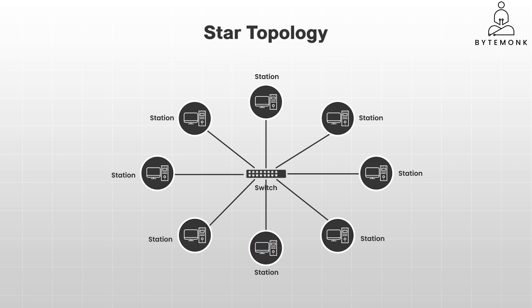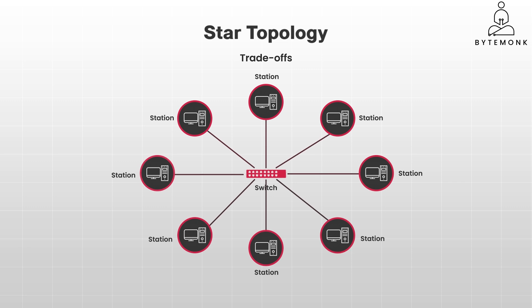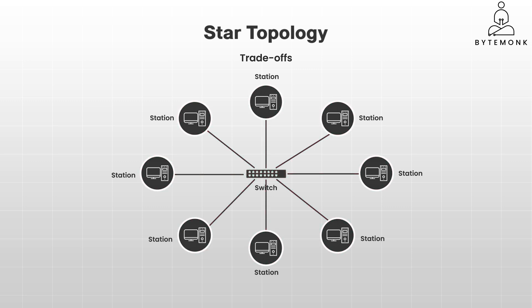No network topology is perfect, and star topology has its own trade-offs. The most notable is its dependence on the central hub — if the hub fails, the entire network goes down. It's a single point of failure. Additionally, the hub's capabilities can become a bottleneck, limiting the overall speed and performance of the network. And since each device needs its own cable to connect to the hub, the distance you can span is limited by the cable length.